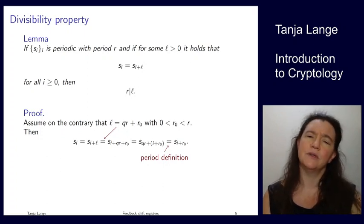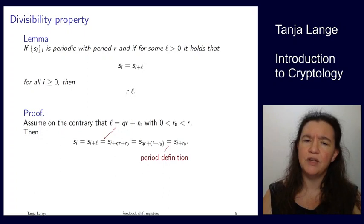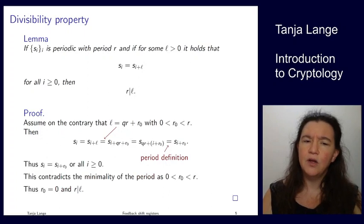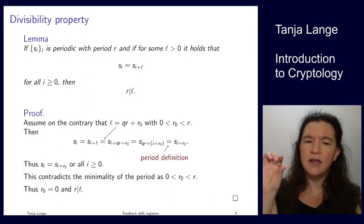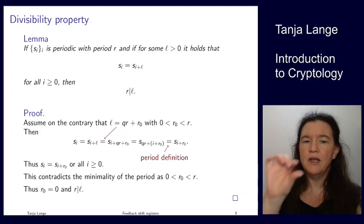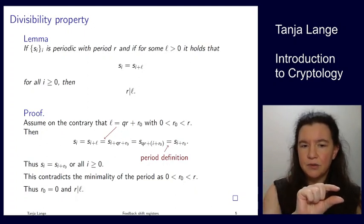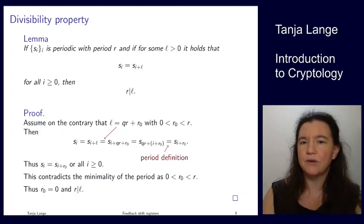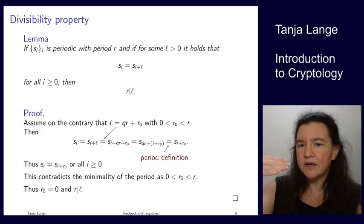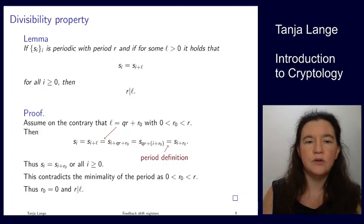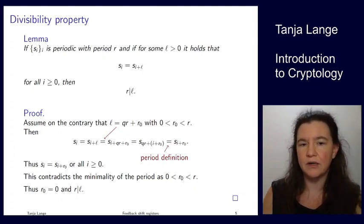So we've now just shown that for any i, we have that s_i is equal to s_{i+r0}. But that's actually the definition of period or periodic function. And we have said that r is the smallest for which this holds for all i. But we've just shown that this also holds for r0 anyway. Our assumption is r0 is strictly between 0 and r.